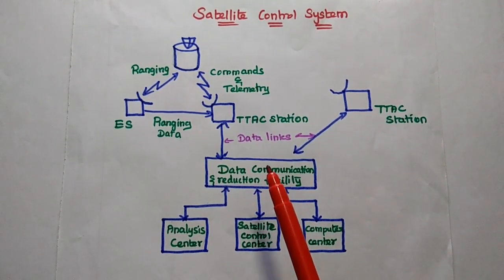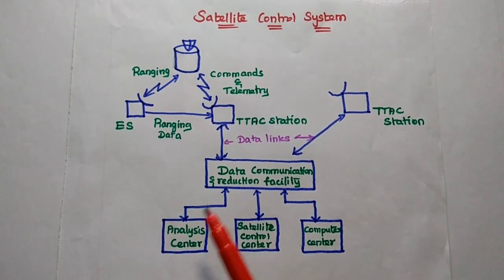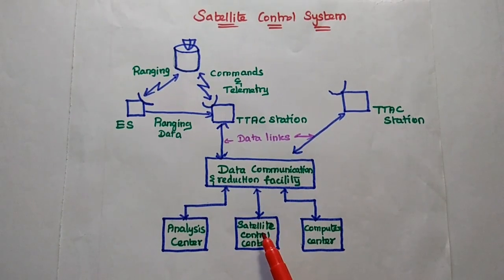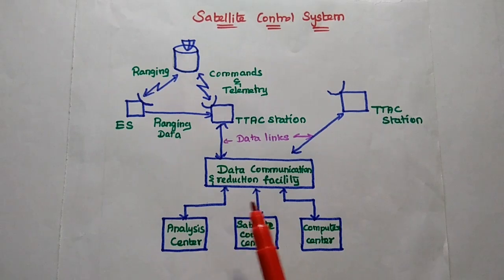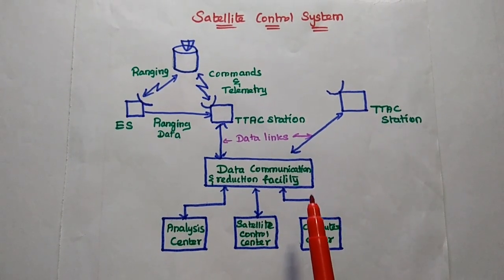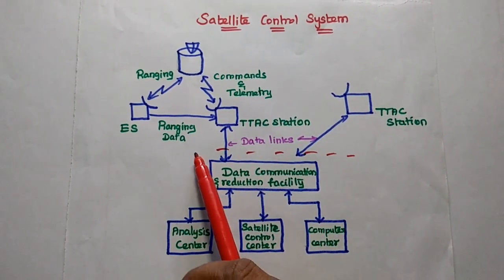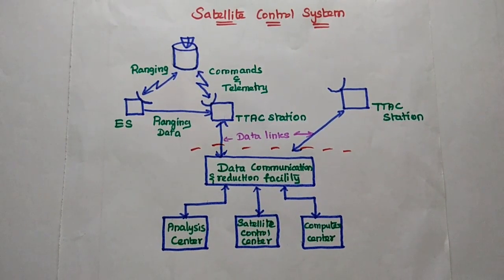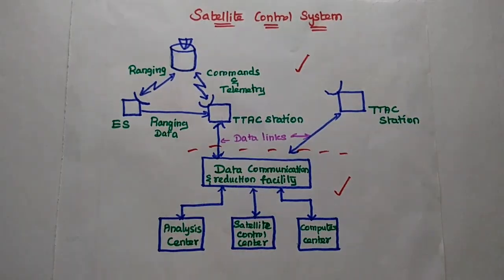Whatever satellite information is received from the telemetry system must be analyzed at the analysis center. If any correction or control of the satellite is required, that is identified at this point. These are the ground facilities for the TTNC subsystems, and up to this point we can have the required facilities at the earth station. The TTNC functions are complex operations which require proper ground facilities as well as spacecraft facilities.